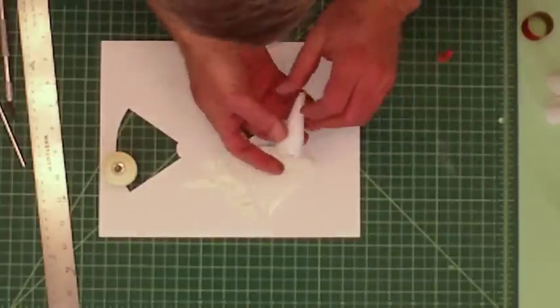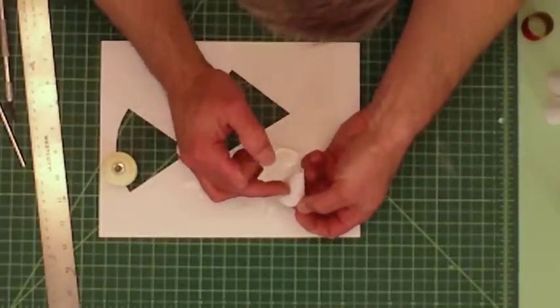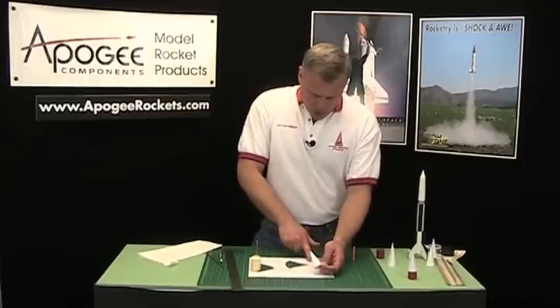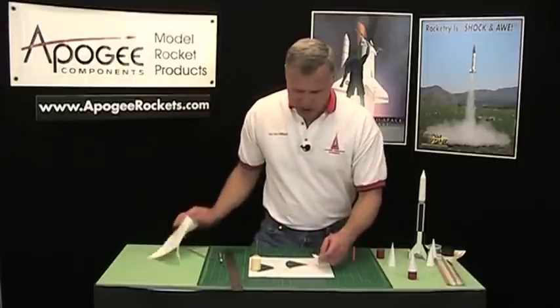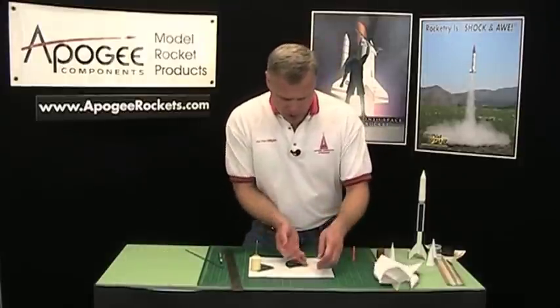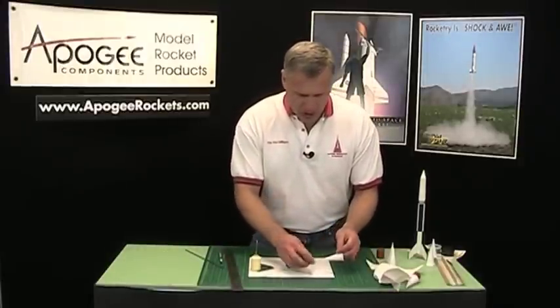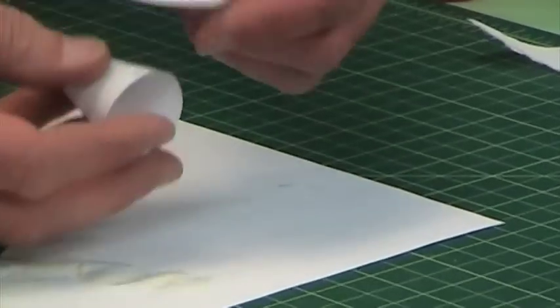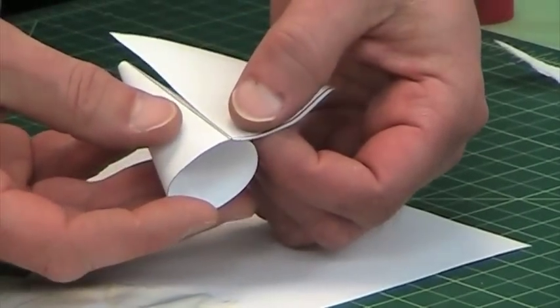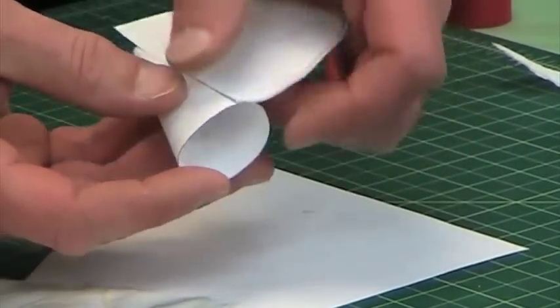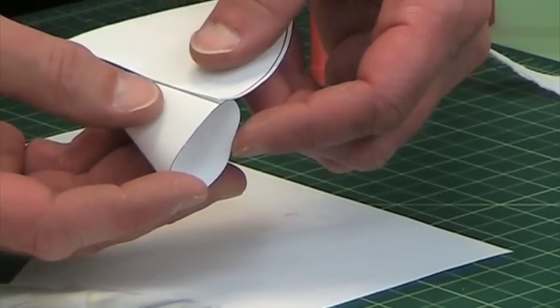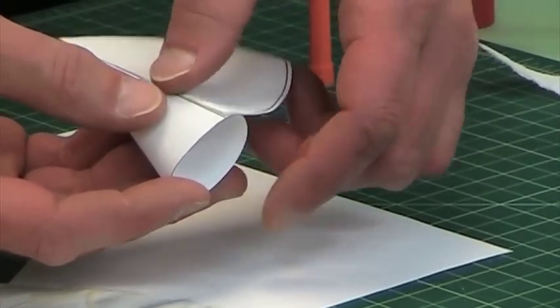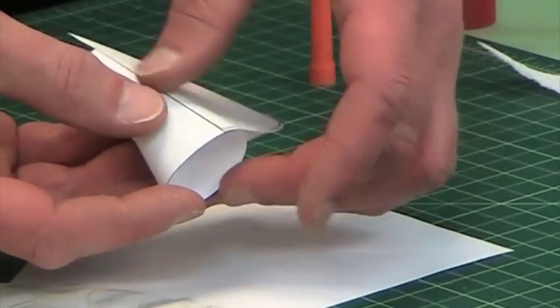And then remember, on our pattern we had a line. Try to get all the glue off your finger on this, because otherwise the glue is going to get on the outside of the transition. Now I'm going to take the edge here and line it up with that overlap. That's going to be along the bottom here. And I'm just going to bring it up the cone like this, so that it lays right along that line.